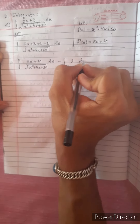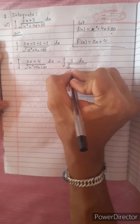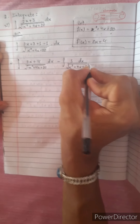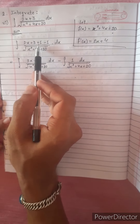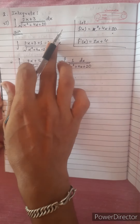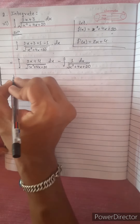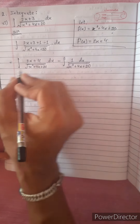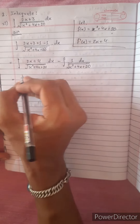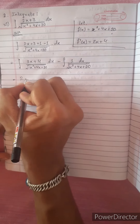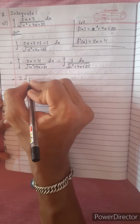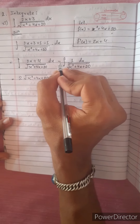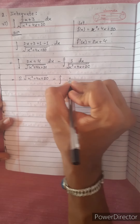Integration of 1 dx divided by under root of x squared plus 4x plus 20. The formula uses f'(x) over f'(x), with 2x plus 4 on top and x squared plus 4x plus 20 below, giving 2 under root of x squared plus 4x plus 20. The formula requires completing the square method.